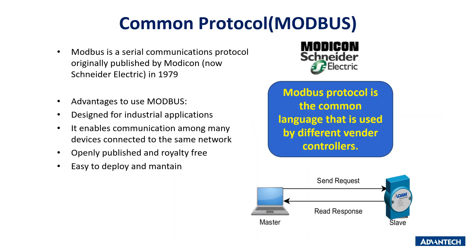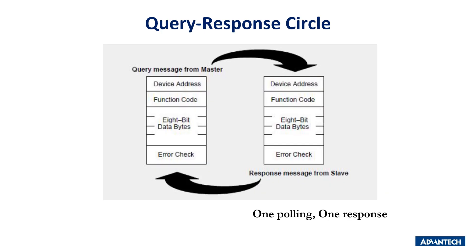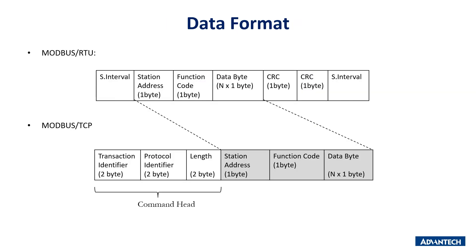Modbus Protocol. Modbus was created by Modicon in 1979 and is used by different vendor controllers worldwide. It is easy to understand, designed for industrial applications, and openly published without any copyright fee. The difficulty of deployment and maintenance of Modbus is relatively lower than other protocols. The basic action is that a master generates a request command and sends it to the slave device through interfaces. If the request is correct, the slave responds with its current status back to the master. This is the comparison table between Modbus RTU and TCP — Modbus RTU has CRC to check commands, but Modbus TCP does not.